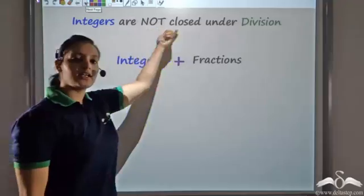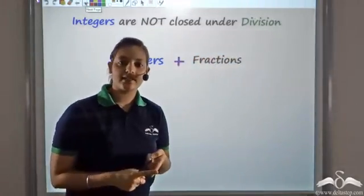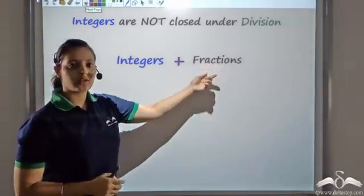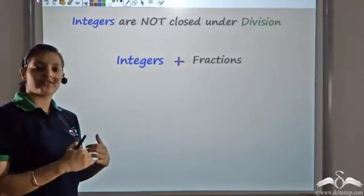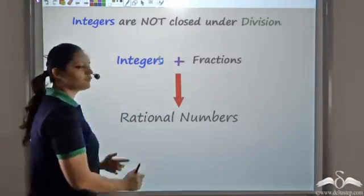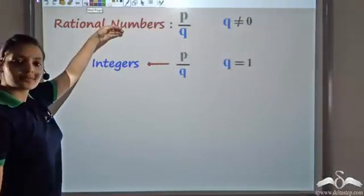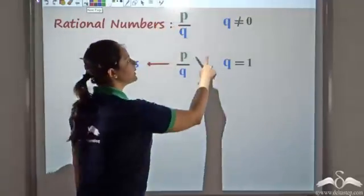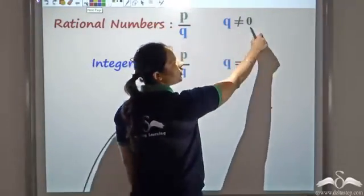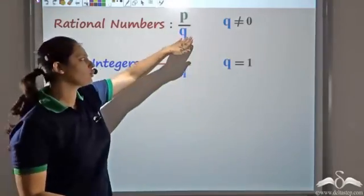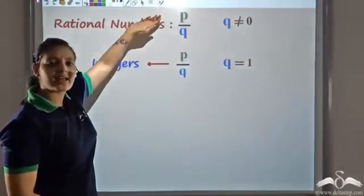Now we have seen that integers could not always represent the result of division, so we introduced fractions. Now I expand my number system — I include these fractions along with integers. Integers plus fractions give me a collection of numbers which I call rational numbers. Rational numbers could be represented as p by q, that is as a common fraction. But the important thing was that q could not be zero, because dividing by zero is meaningless. That is how we defined rational numbers.